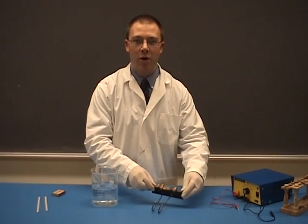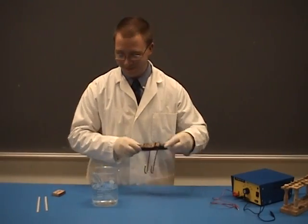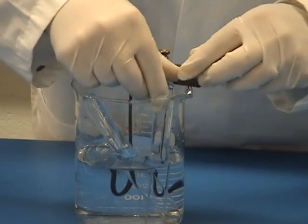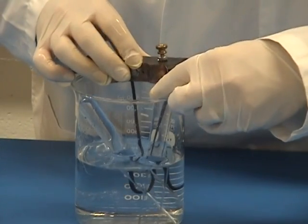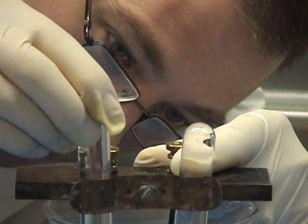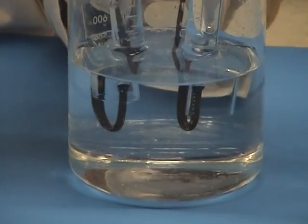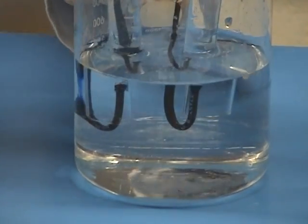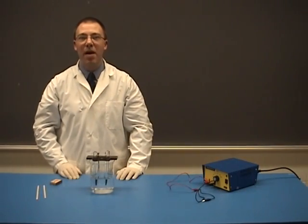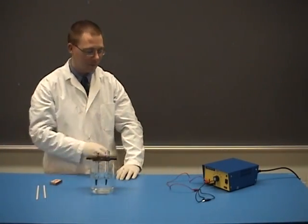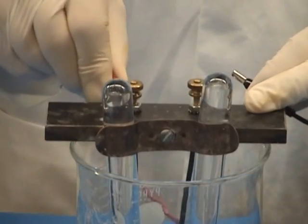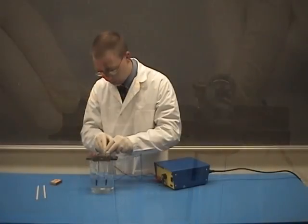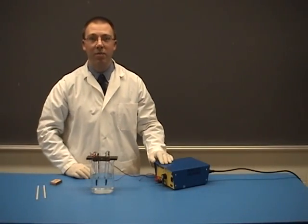Place the electrolysis apparatus in the solution. Place the electrodes under the test tubes. Connect the power supply to the apparatus. Turn on the power supply.